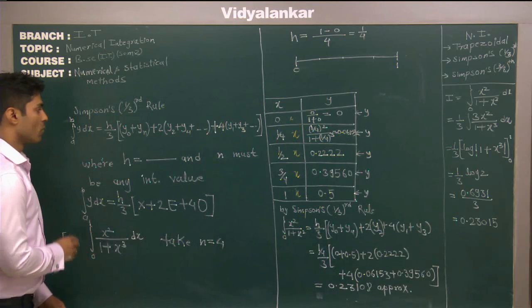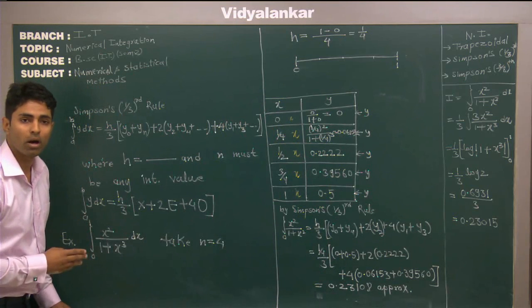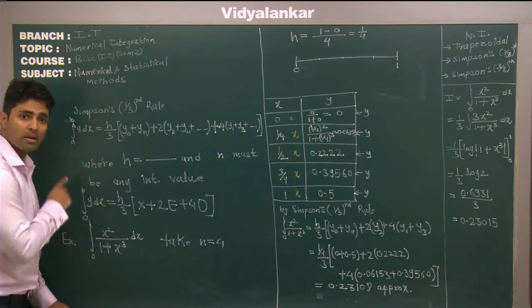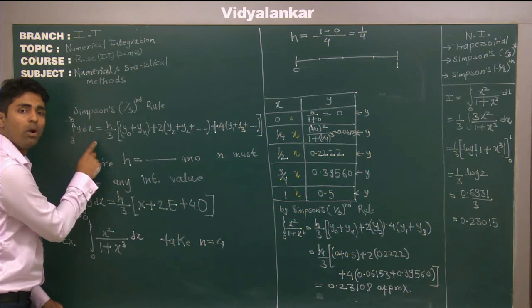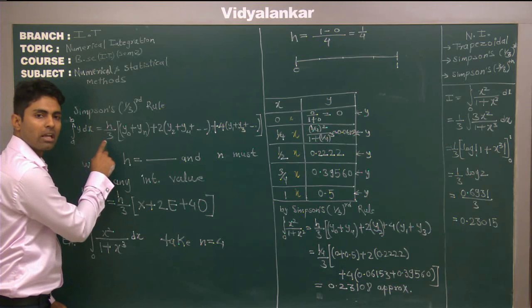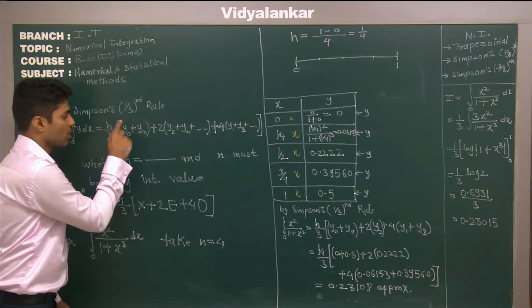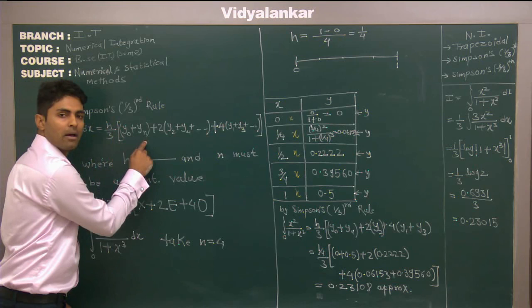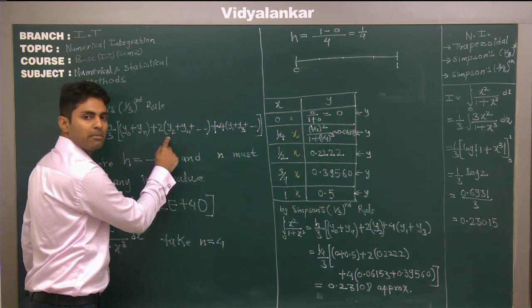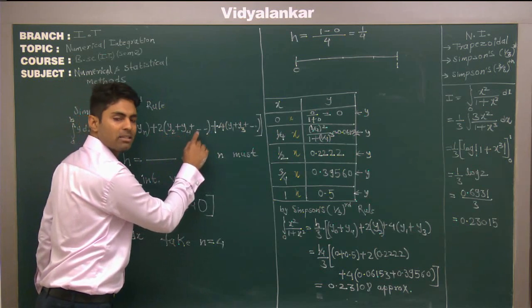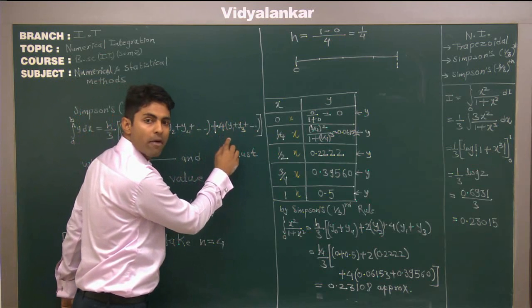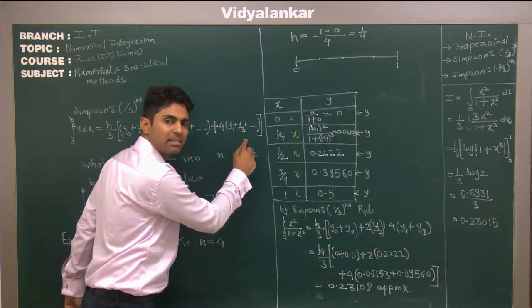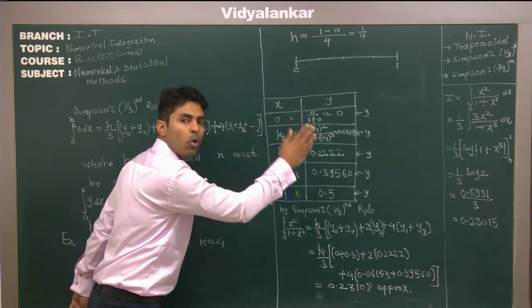In Simpson one third rule, first of all we should know the formula. Formula is very easy. Integration a to b y dx equal to h upon 3, close bracket, y0 plus yn plus 2 times (y2 plus y4 plus so on) plus 4 times (y1 plus y3 plus y5 and so on).